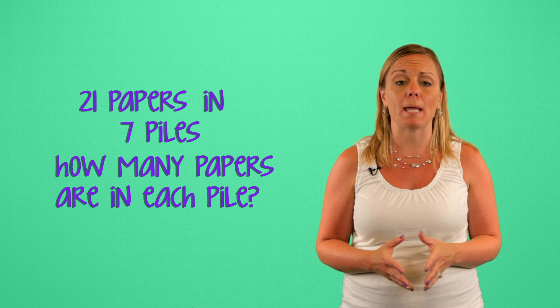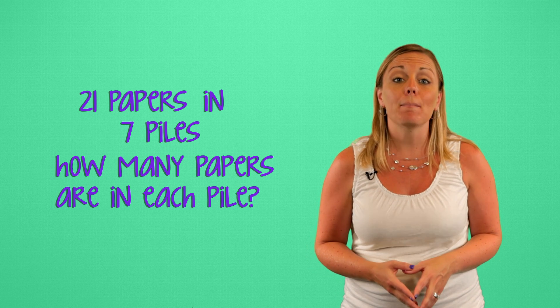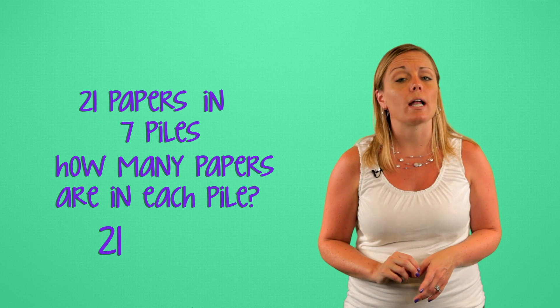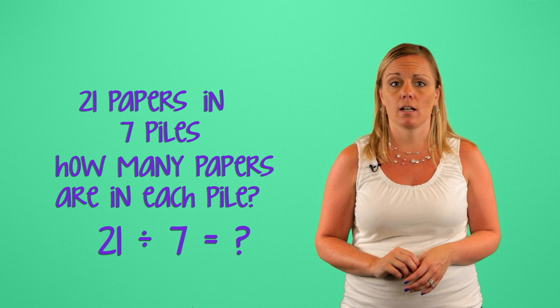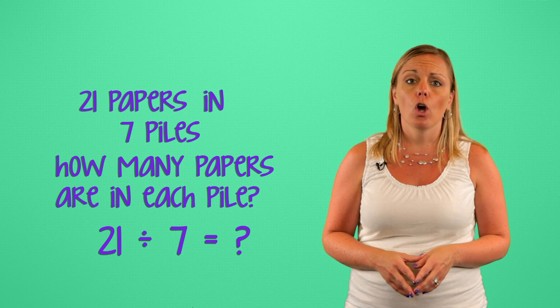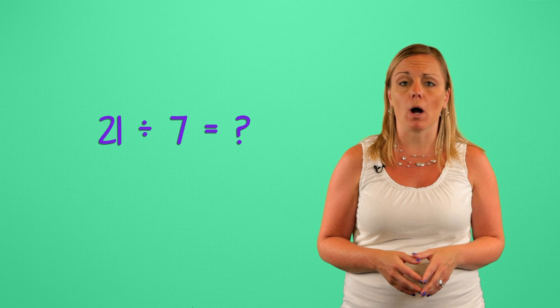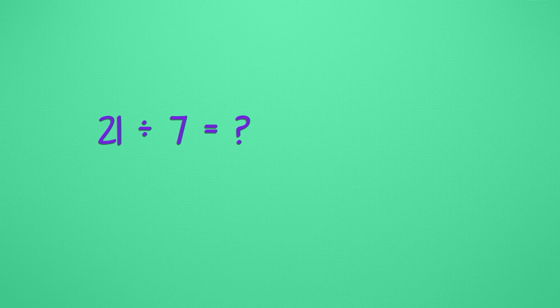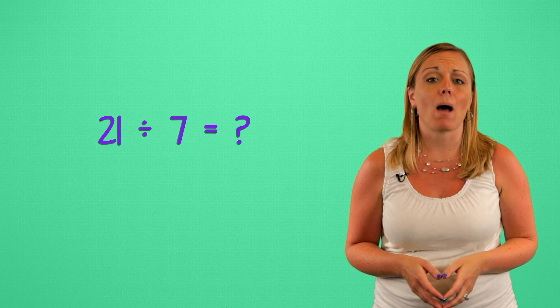We are looking for the number of papers in each pile. That means we are looking for twenty-one divided by seven. Next, I want to draw an array to help visualize this. Which of these arrays represents twenty-one divided by seven? We are placing papers in seven piles, and we have twenty-one total papers.